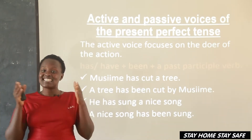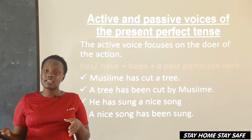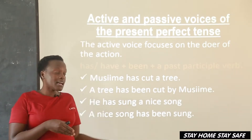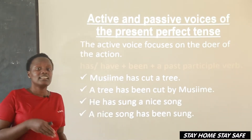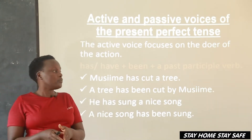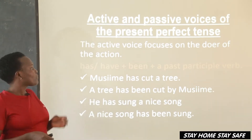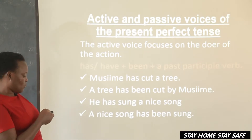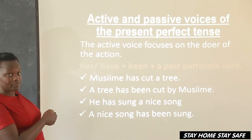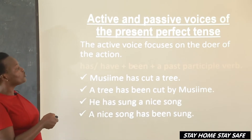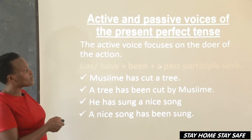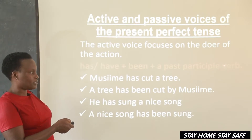It must have the subject, the verb, and the object. In active voice, a sentence must have those three parts. In passive voice, it should also have the subject, the object, and the verb. Here, we are going to use 'has' or 'have,' then 'been,' then the past participle form of the verb.